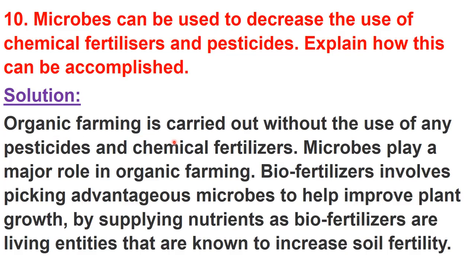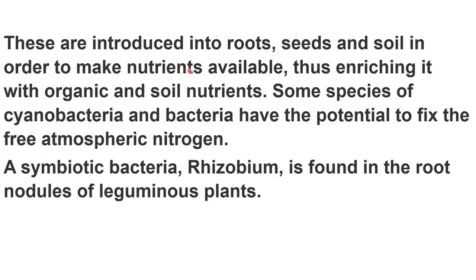Organic farming is a type of farming in which no chemical is used in the form of fertilizer or pesticide. Biofertilizers involve picking advantageous microbes to help improve plant growth by supplying nutrients. Biofertilizers are living entities known to increase soil fertility. These are introduced into roots, seeds, and soil in order to make nutrients available.